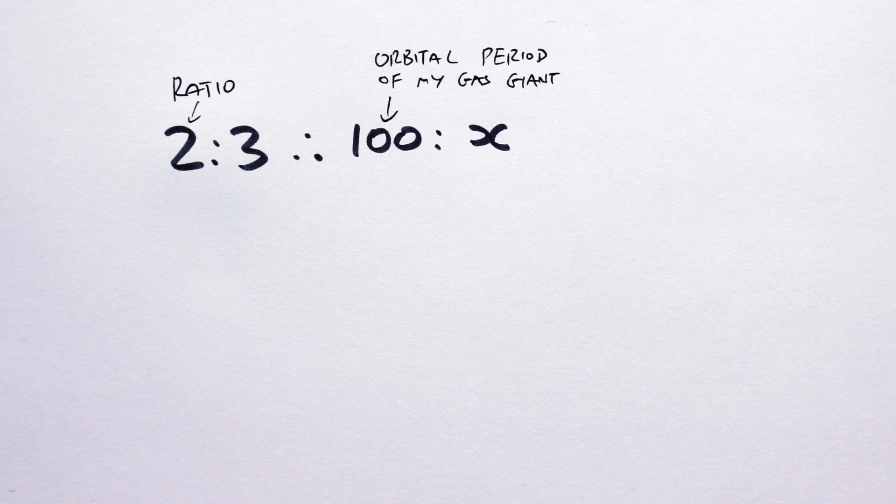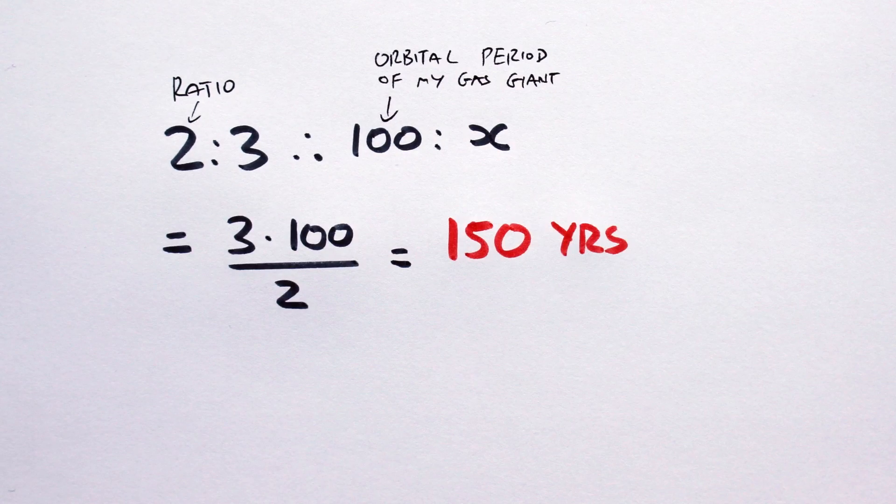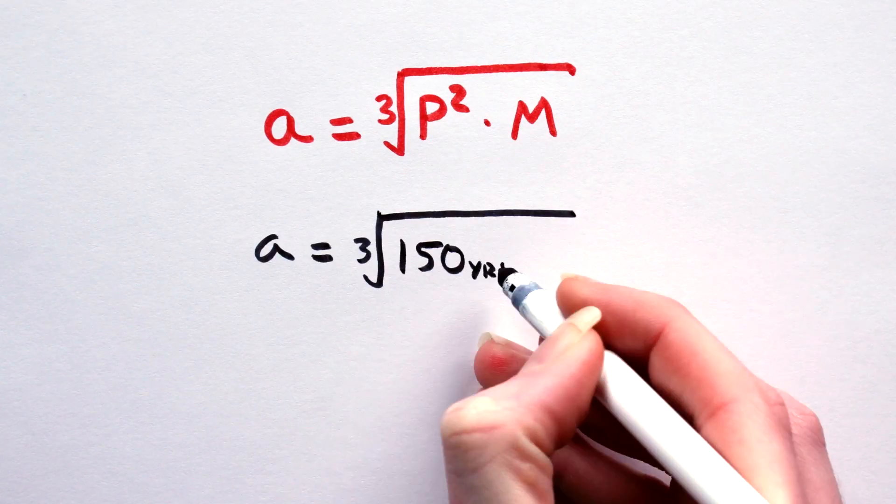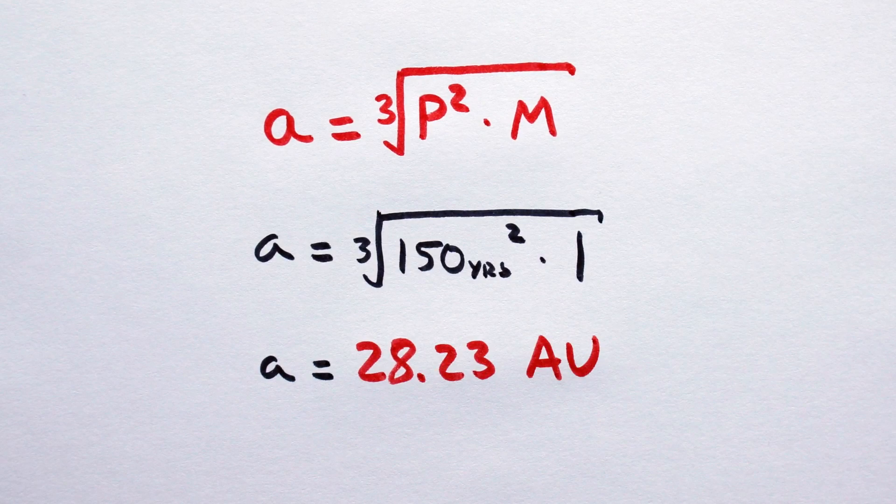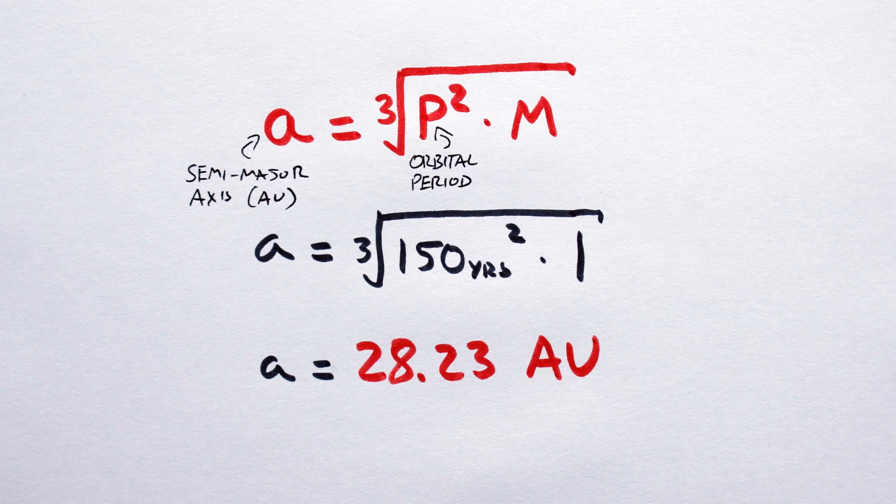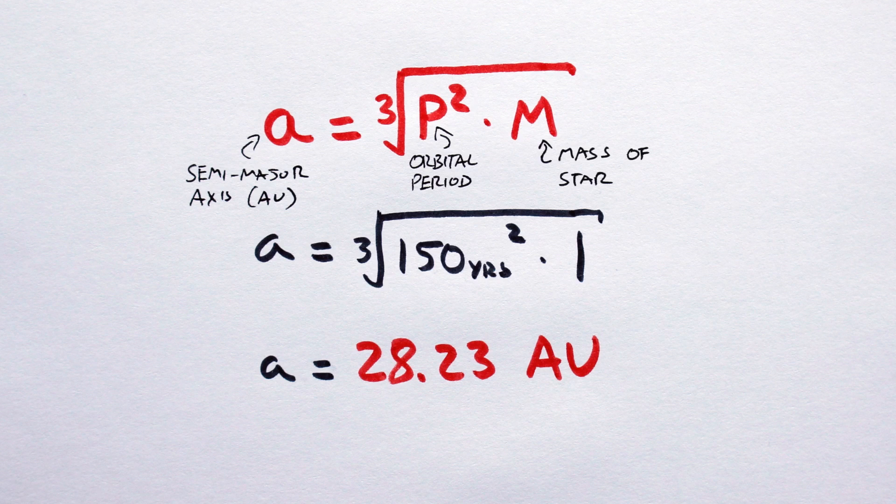Anyways, convert the ratios to orbital periods, i.e. year lengths, using simple multiplication. Then convert the orbital periods into distances in AU using Kepler's third law, rearranged like so. Where A is the semi-major axis of the orbit in AU, P is the orbital period in Earth years, and M is the mass of your system's star in solar masses.